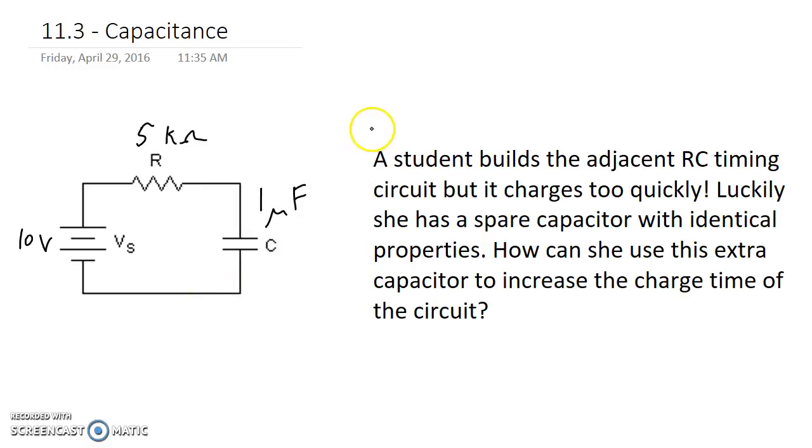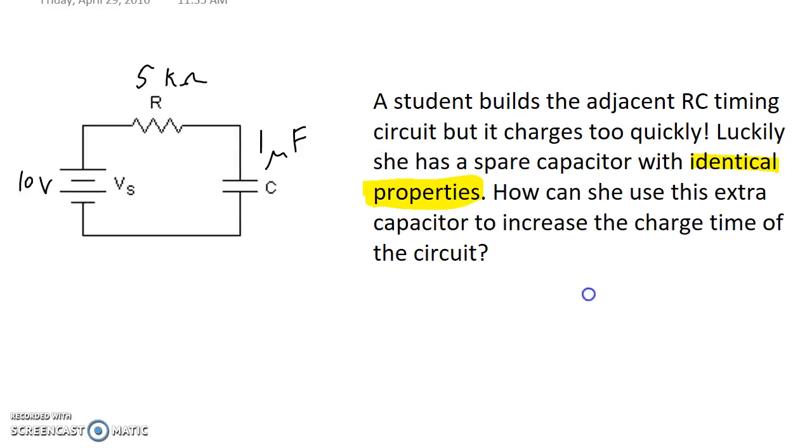The time that it takes for the capacitor to charge gets set by the capacity of the capacitor and the resistance limiting the current into the capacitor. So we have a student that builds this circuit but finds that it's charging too quickly for her needs. She happens to have a spare capacitor that has identical properties to the one that's already in the circuit. We want to know how can she use this capacitor to increase the charge time of the circuit.